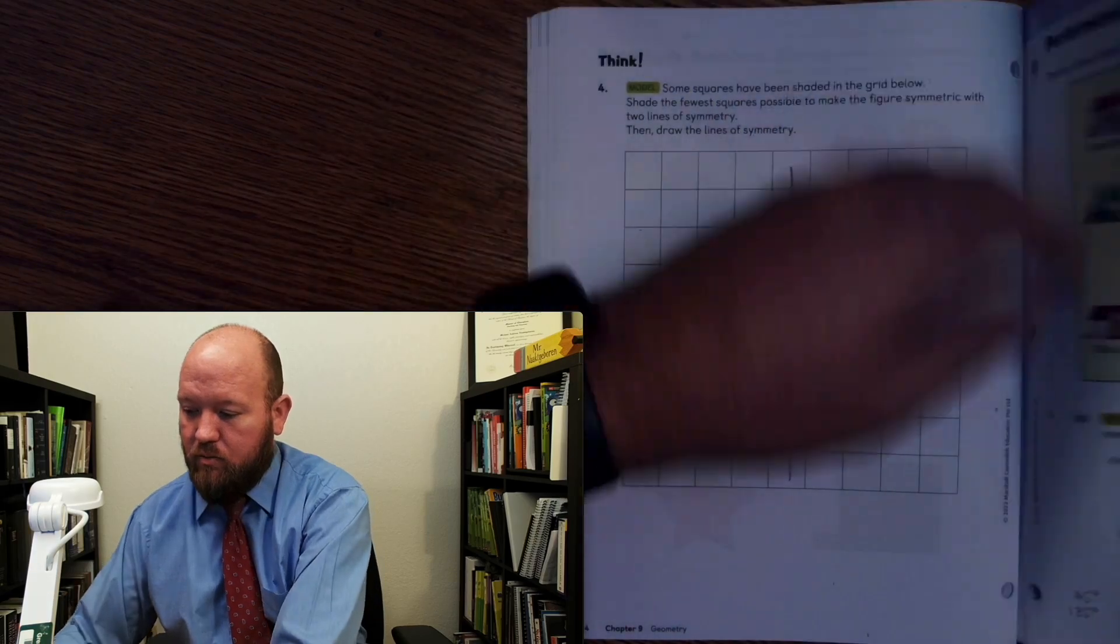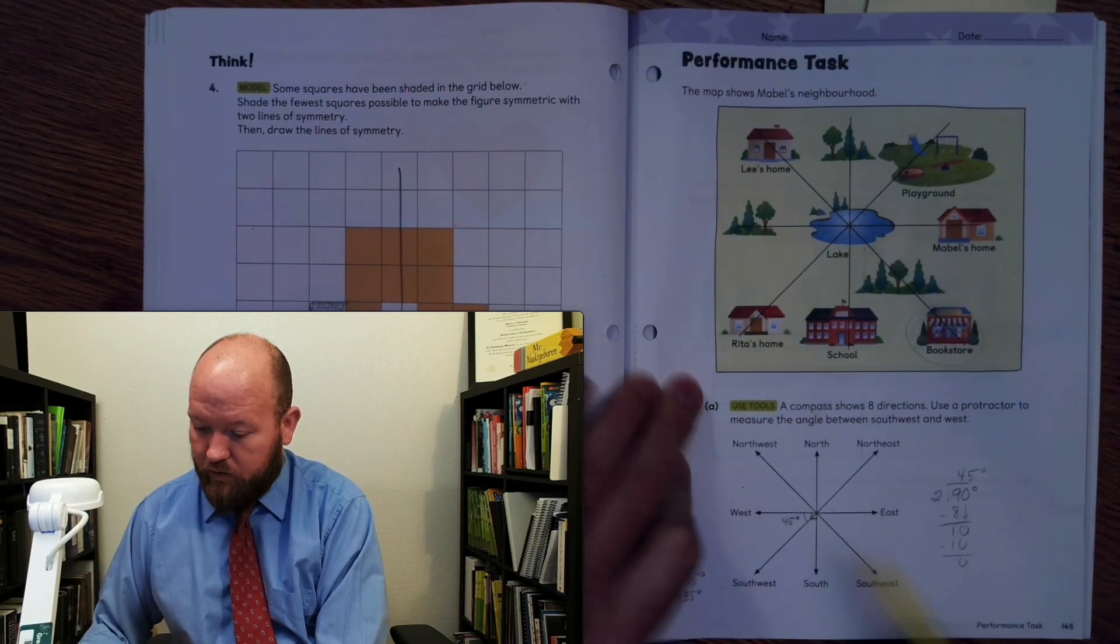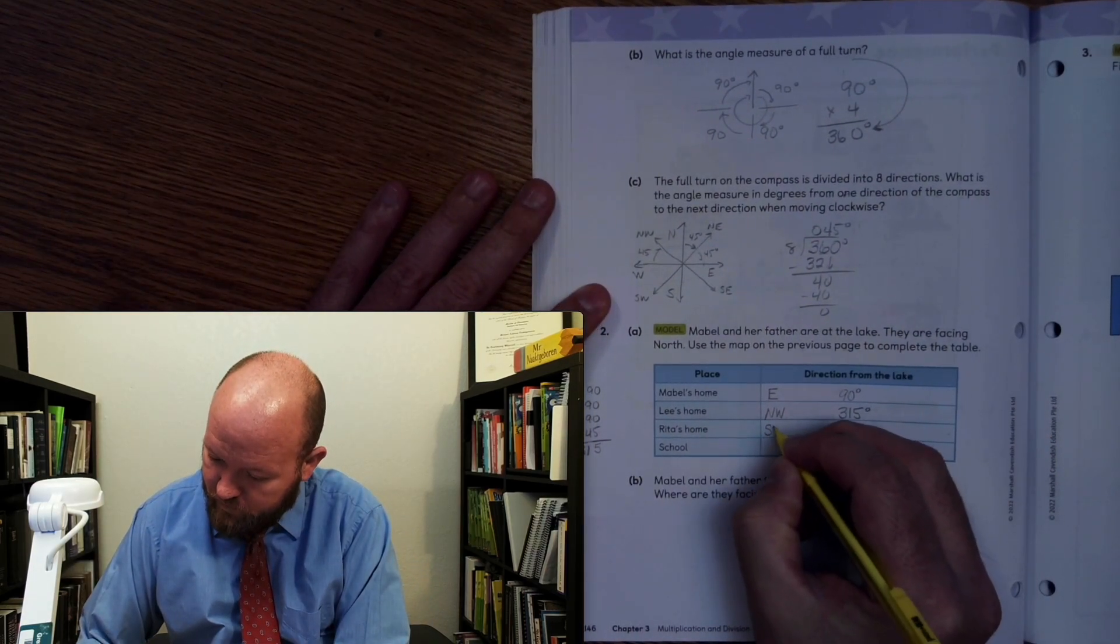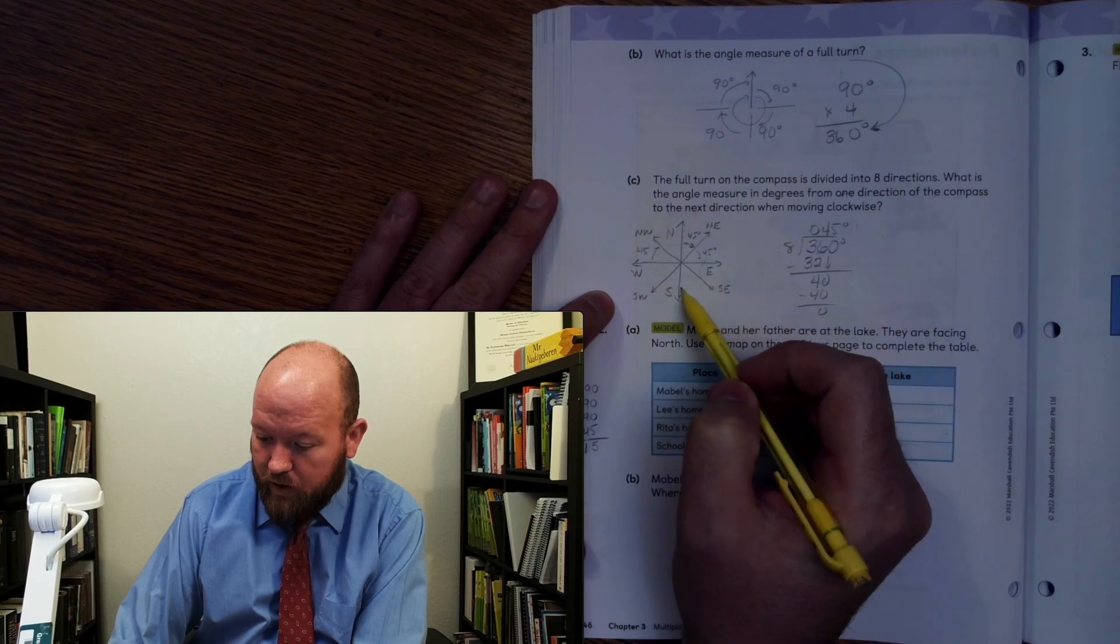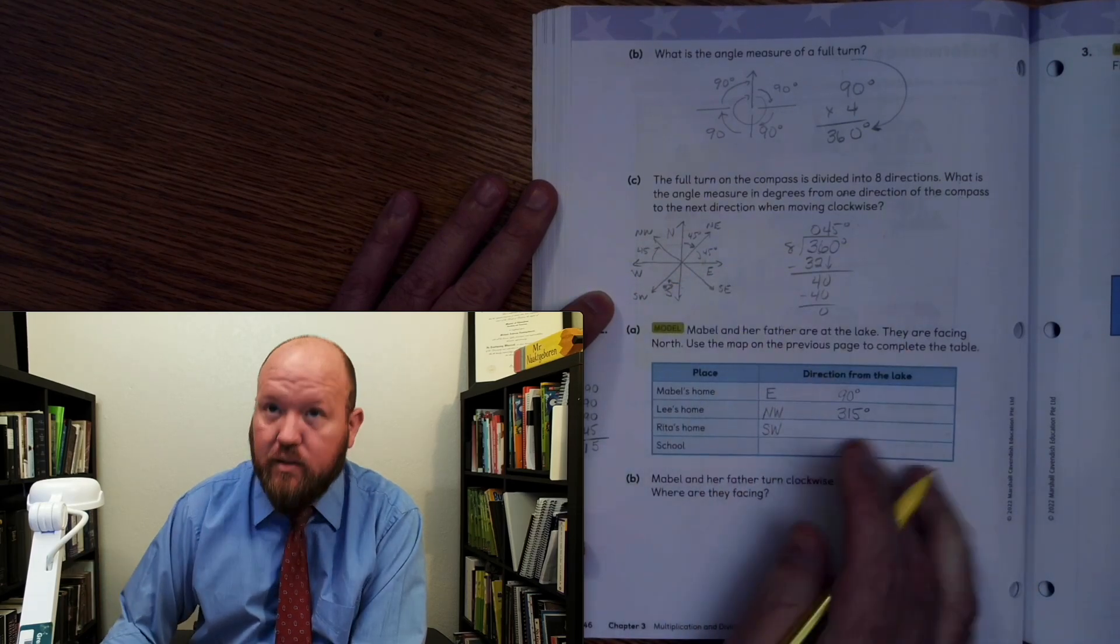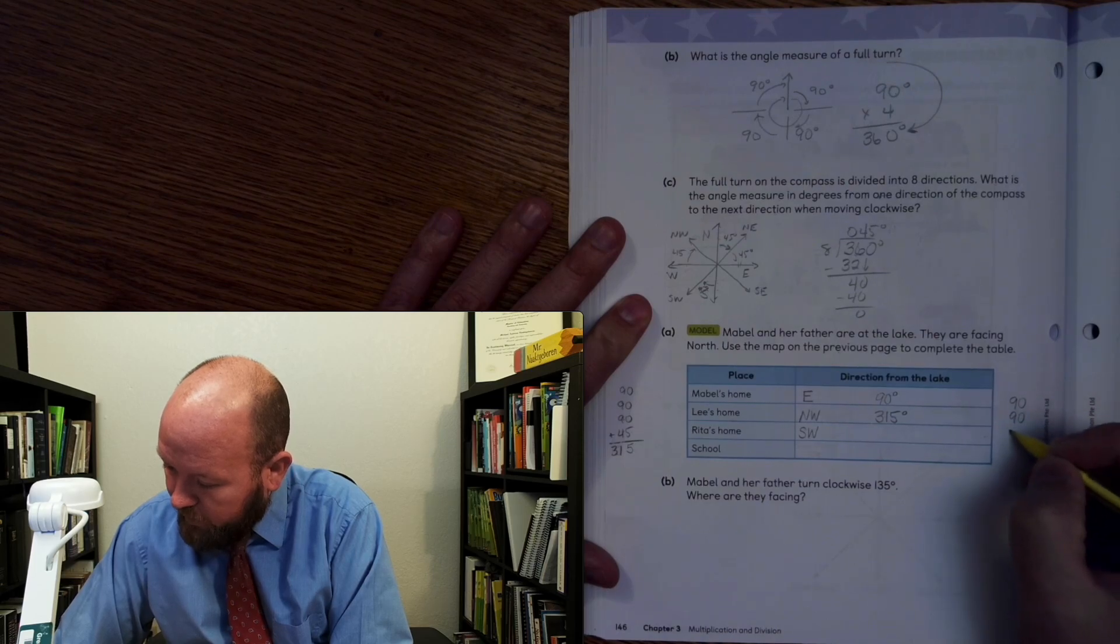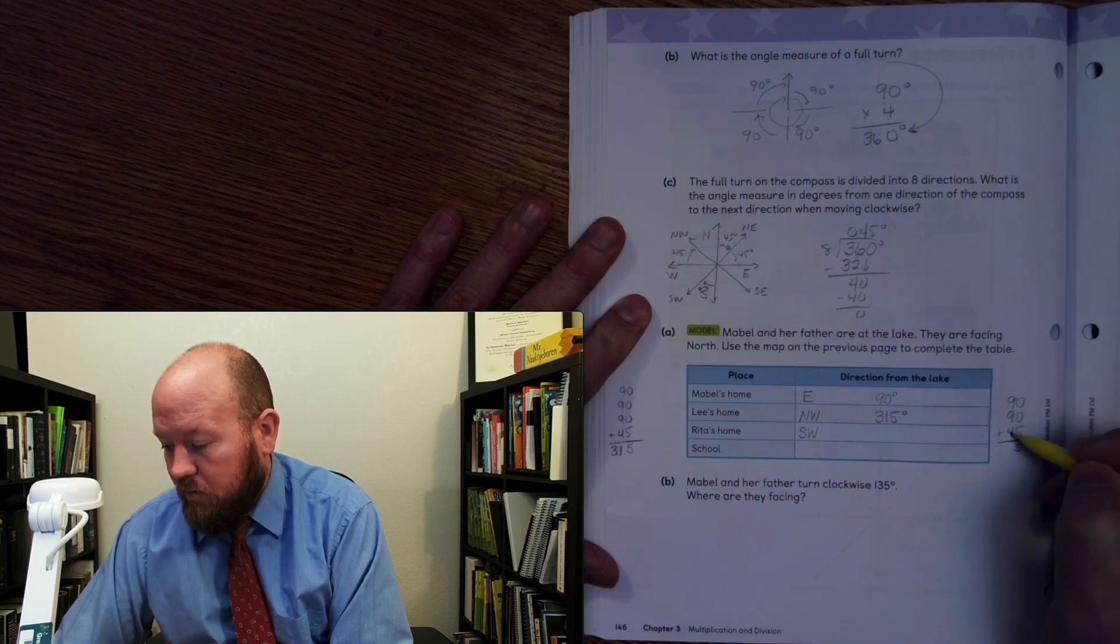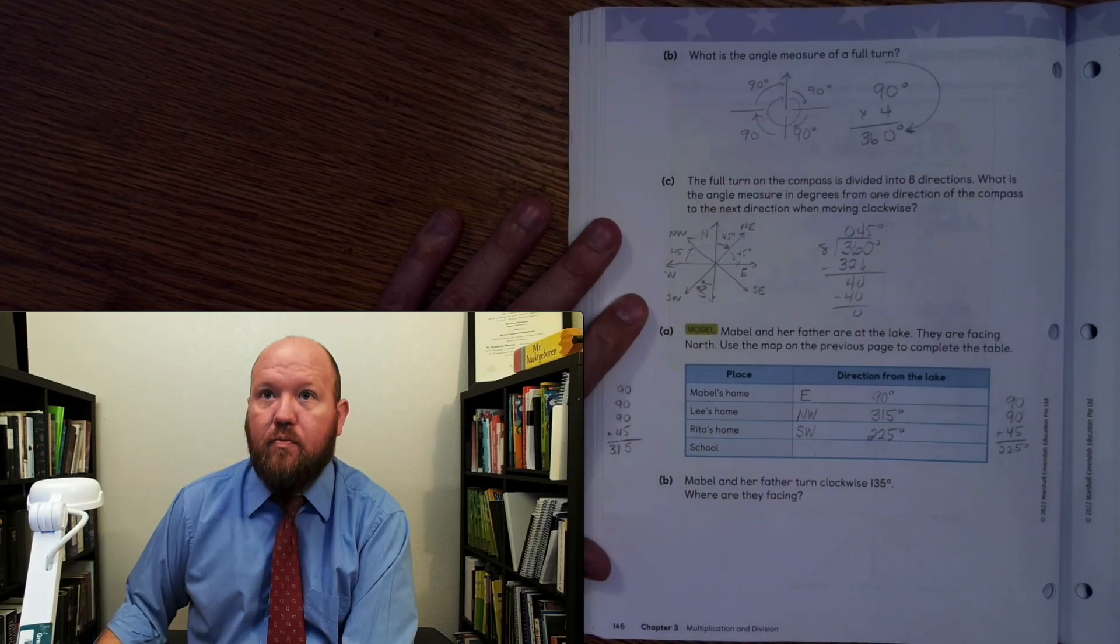All right. What about Rita's home? So let's like Rita's home. Okay. Rita's home is southwest. Okay. So we're going to go southwest. So how far do we have to go? Well, we know to go from here to here is 90. From here to here is another 90. And then what was this again? This is going to be 45 degrees, right? So now we got to go 90, 90, 45. 90, 90, 45. Zero plus zero plus 5 is 5. 9 to 9 is 18 plus 4 is 22. Okay. So 225 degrees.